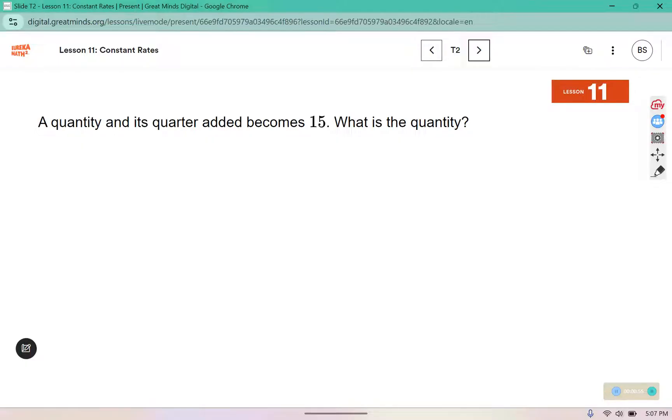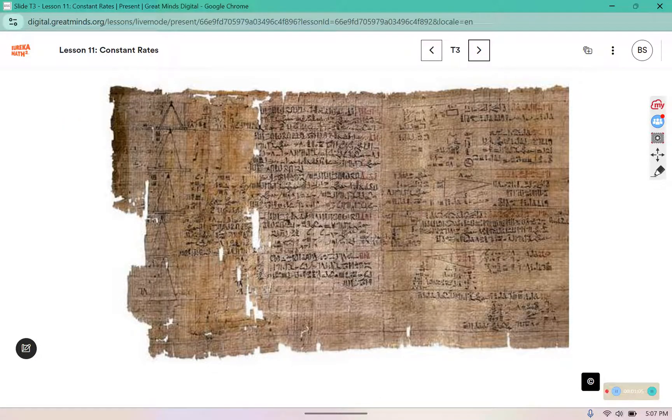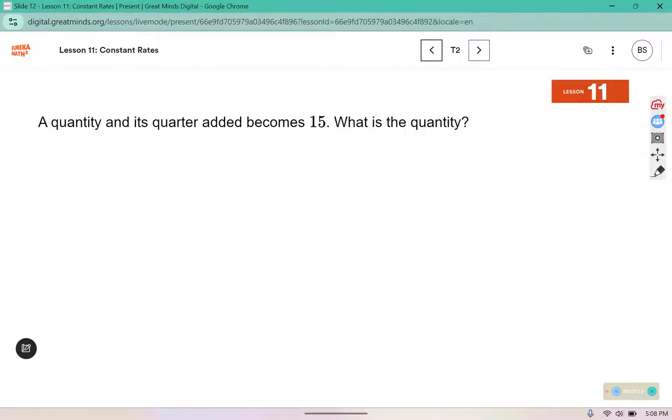Here we have a question that says, a quantity and its quarter added become 15. What is the quantity? This question was originally found in this piece of papyrus. An Egyptian began with the number 4 as his first guess. So if we added 4 and its quarter, which a quarter of 4 is 1, we would get 5.